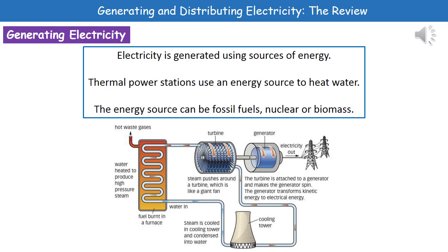The steam that we've used in our turbine doesn't just get released into the atmosphere as it is. It gets sent to a cooling tower where the steam is then cooled down and condensed back into water, where it then goes back into the furnace once more. So we're not having a very wasteful process here. The electricity we've generated is then transferred to the national grid and transmitted around the country.